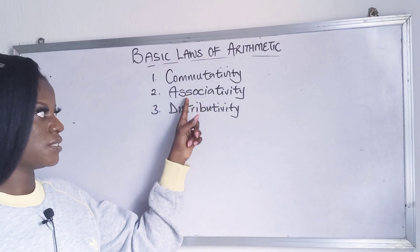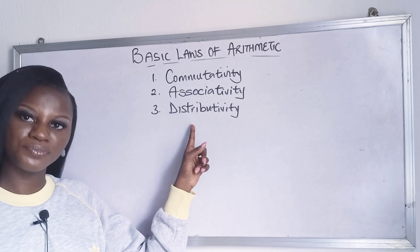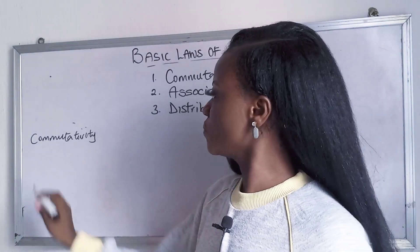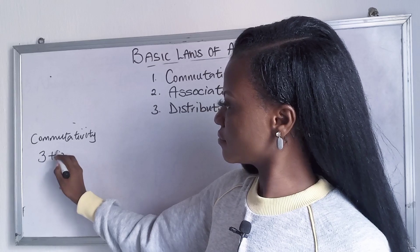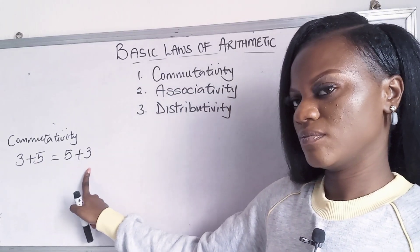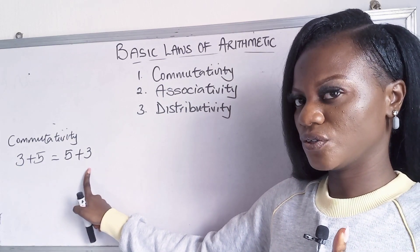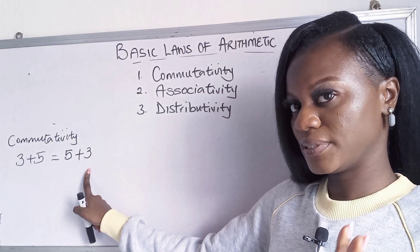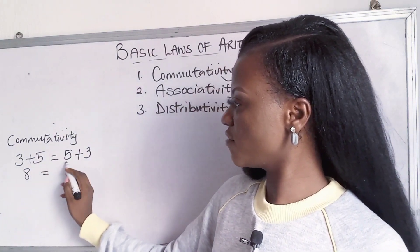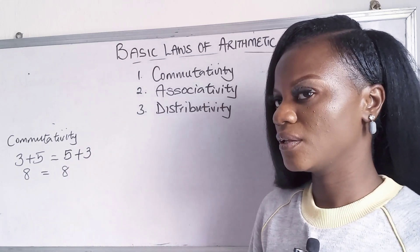We have commutativity, associativity, and distributivity. I'm going to explain what these are about. So for commutativity, in a case where we have 3 plus 5, commutativity says that you can reverse this under addition and multiplication. Please take note. So 3 plus 5 is 8, and 5 plus 3 also gives you 8.